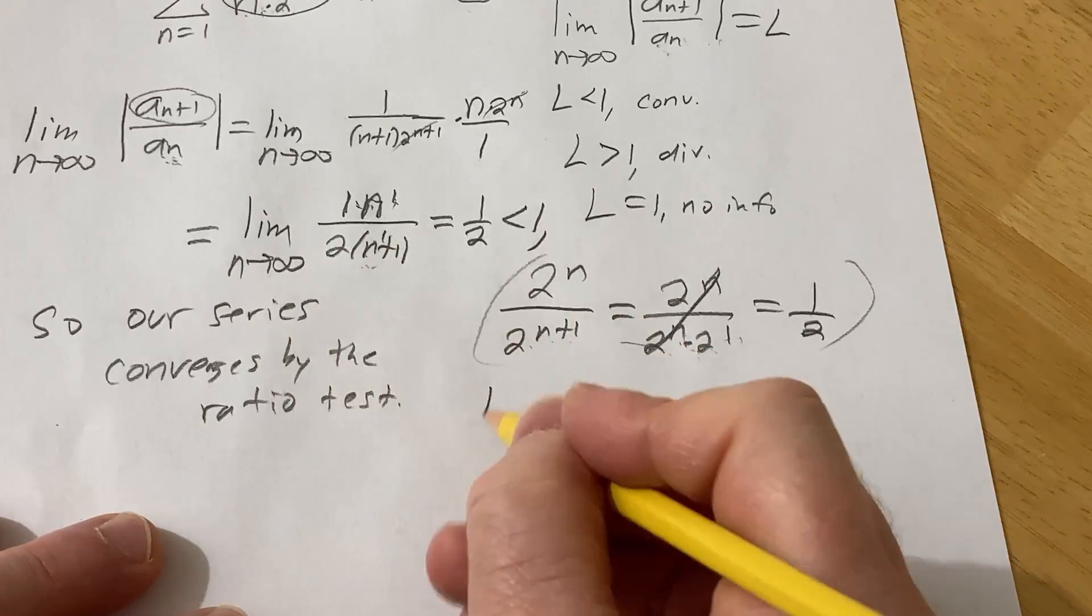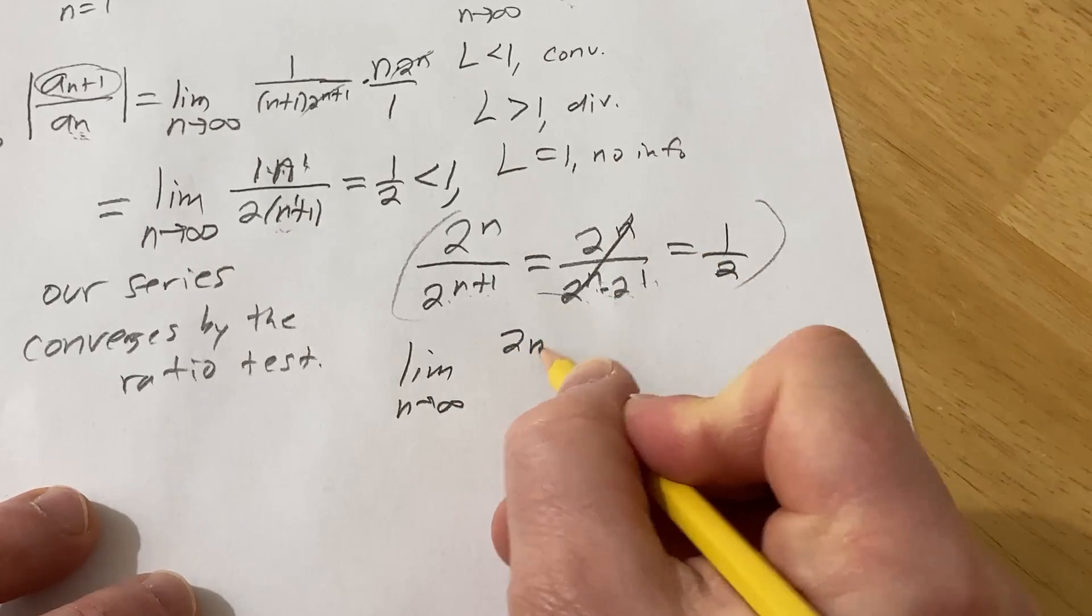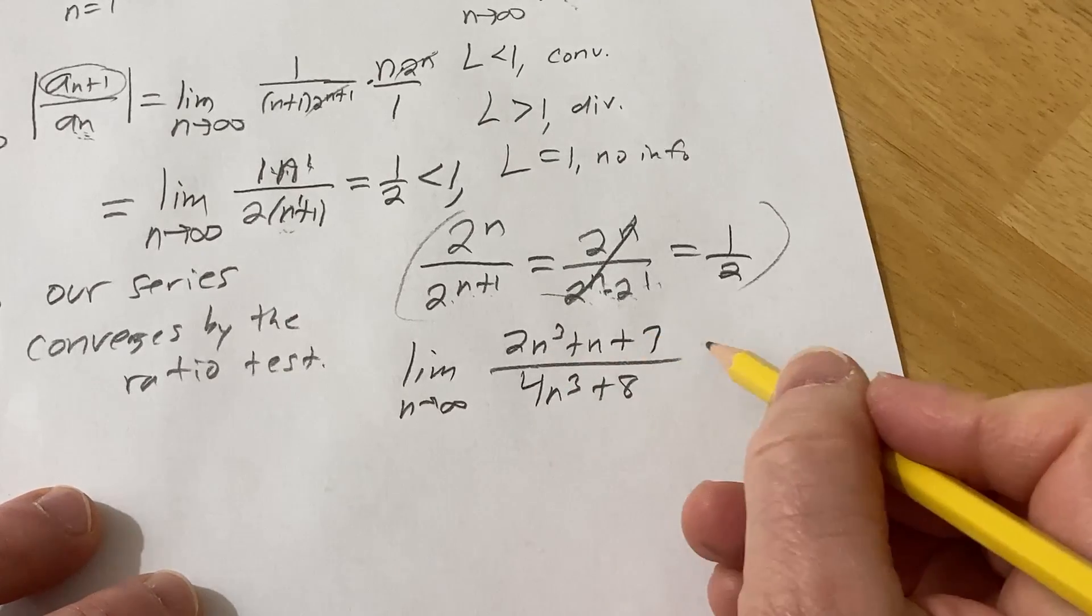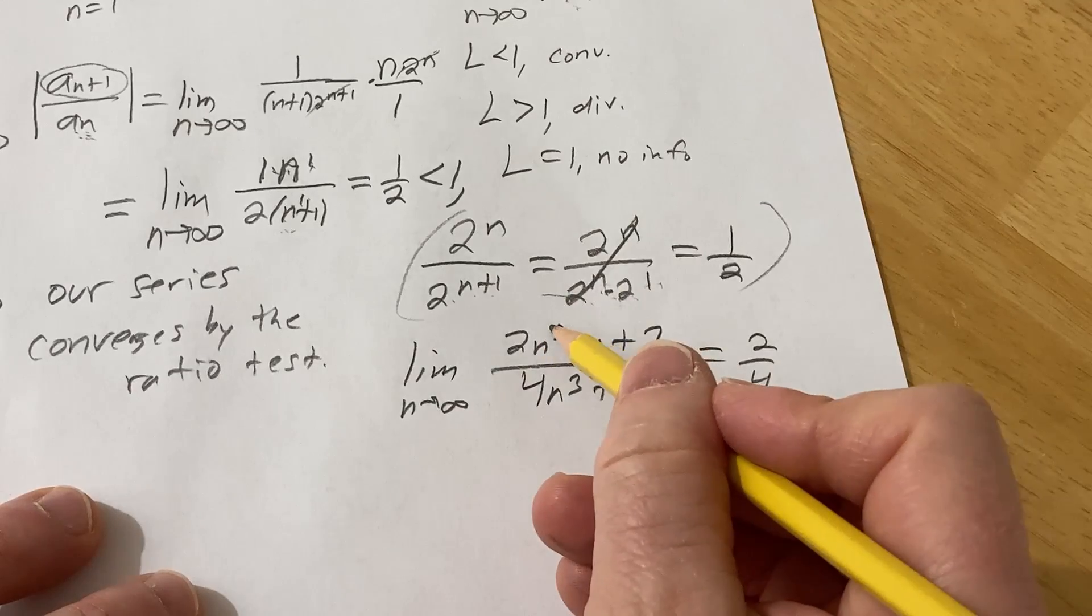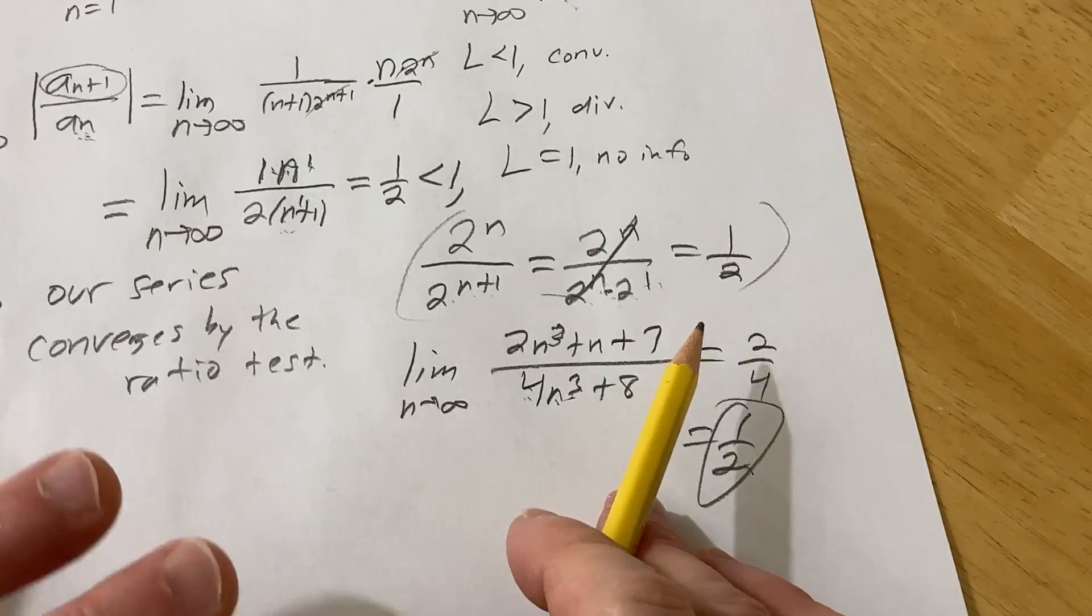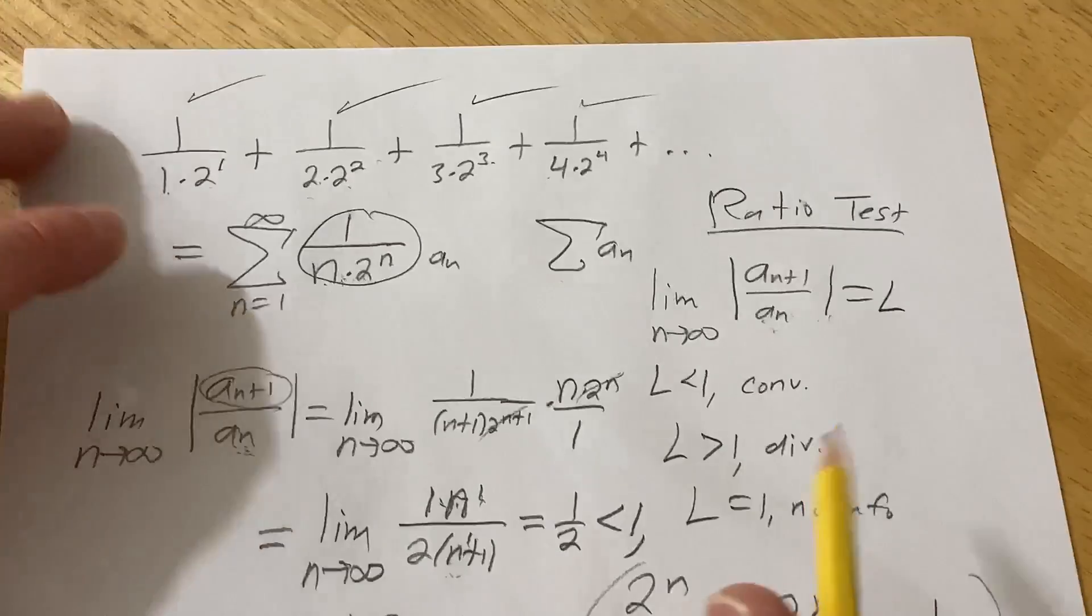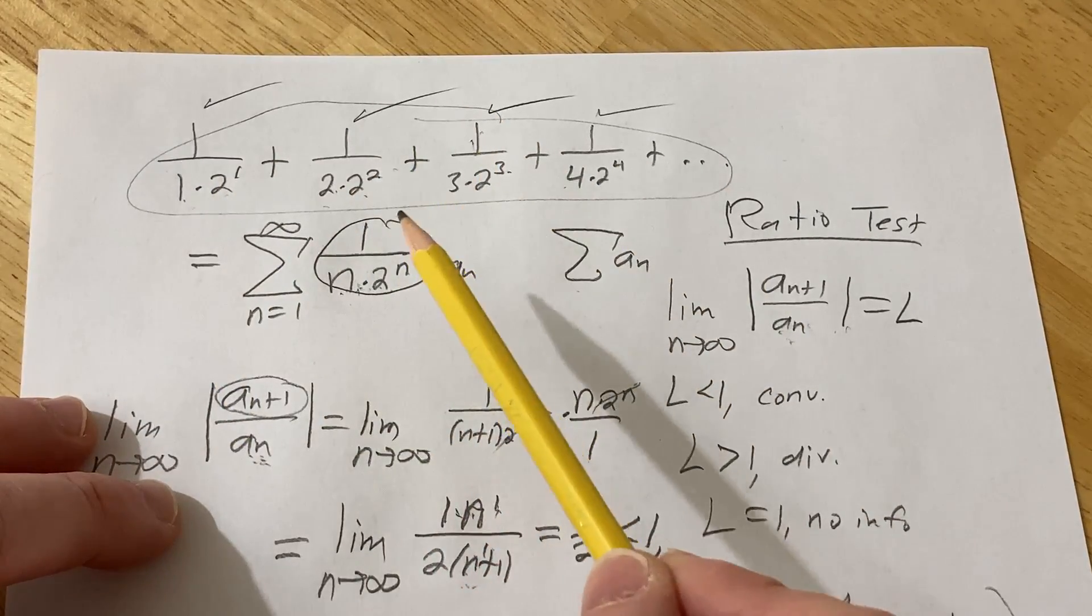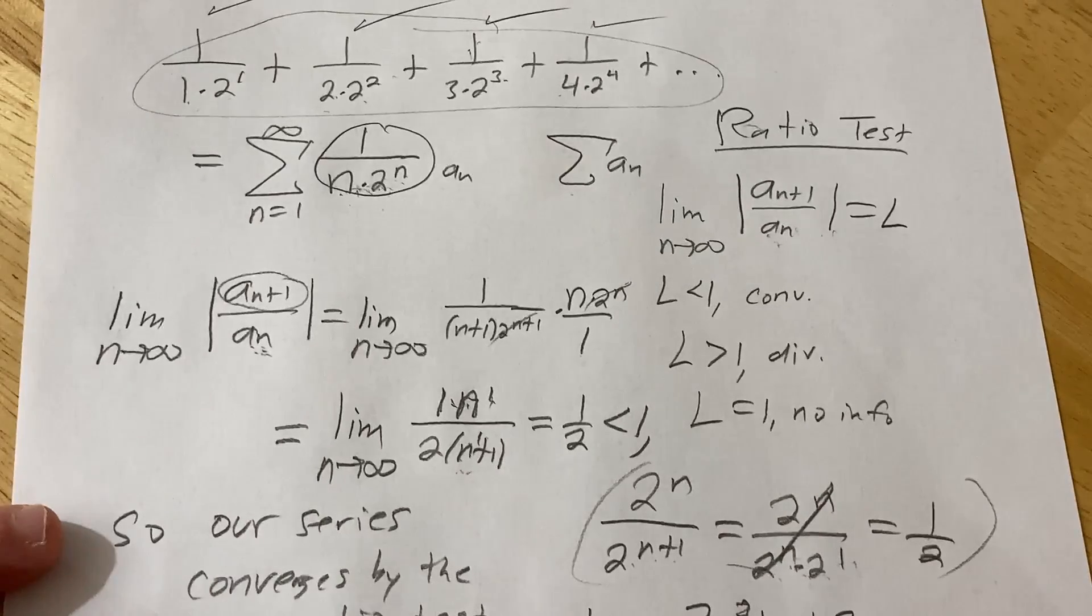So just to make that part clear, if it had been something like, let's just say you had something like this, 2n cubed plus n plus 7 over 4n cubed plus 8. In this case, it'd be 2 over 4, which is one half, because the degrees are the same. So whenever they match, you just divide the leading coefficients. If the number on the bottom is bigger, you get zero. So pretty cool. So simple problem. Just ratio test application. Kind of fun because it was written this way. So we had to basically convert it into this and then apply the ratio test.